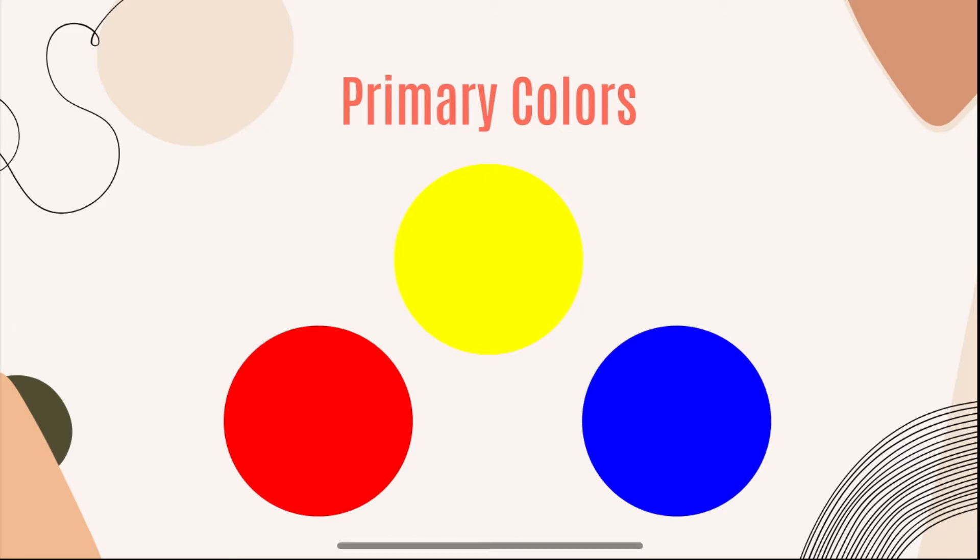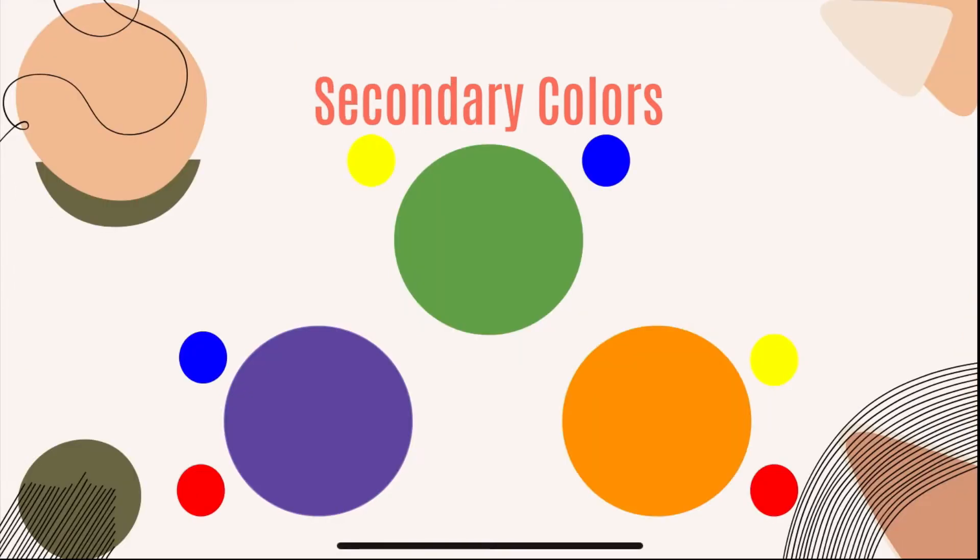Our secondaries are purple, green, and orange. And you can see right here the dots that correlate with making those colors. So purple, we know we need red and blue. Green, we need yellow and blue. And orange, we need red and yellow.